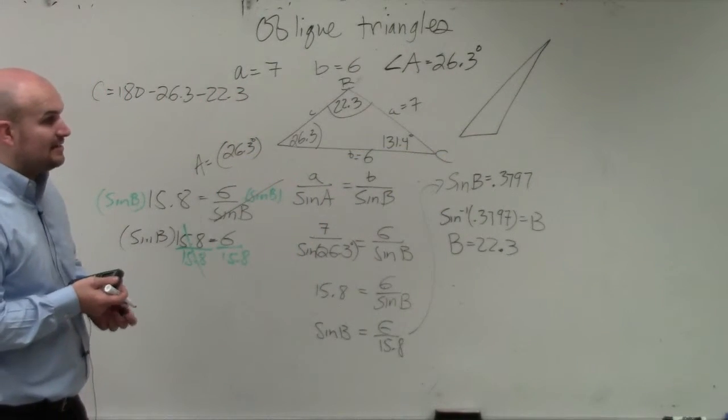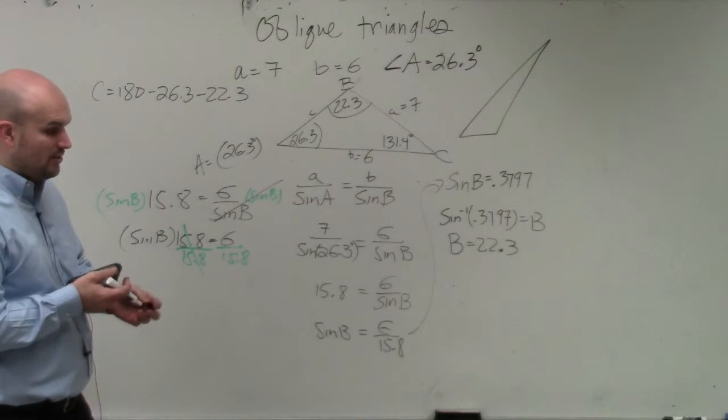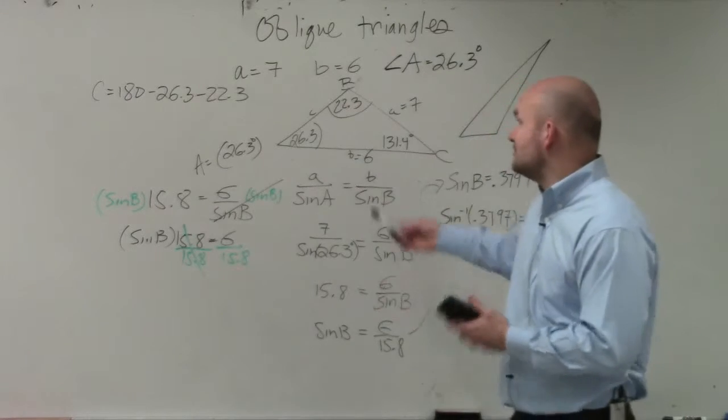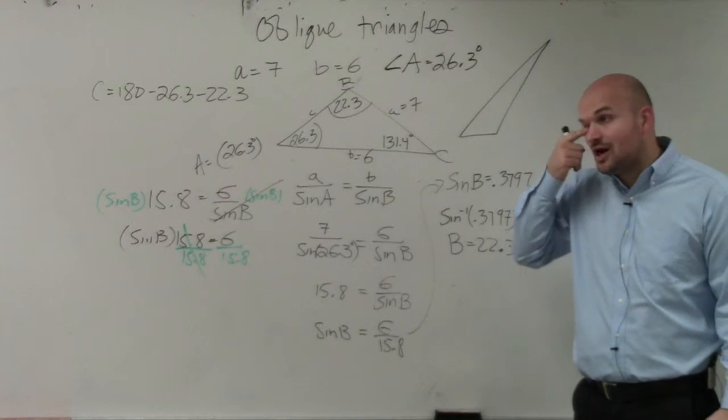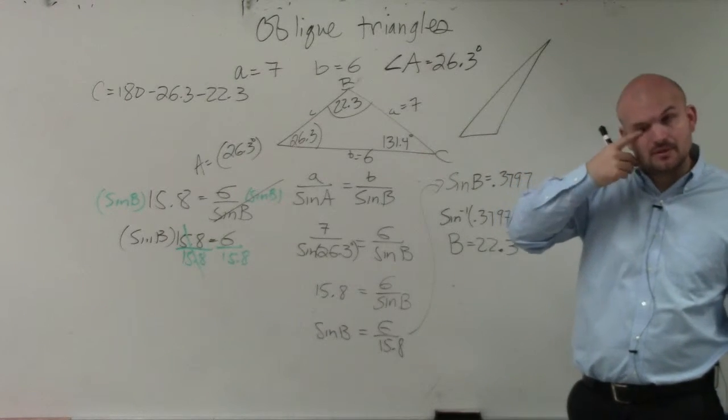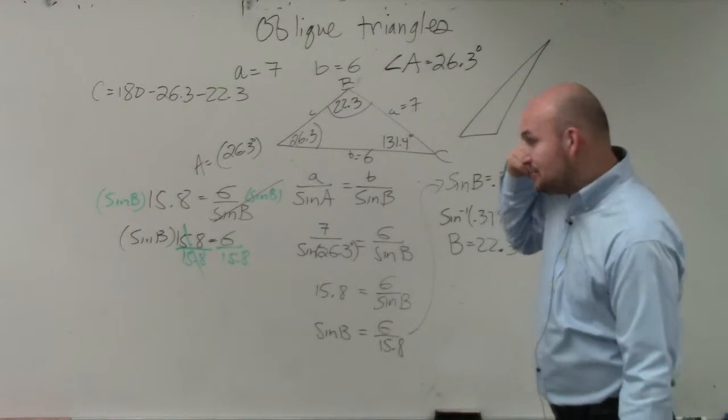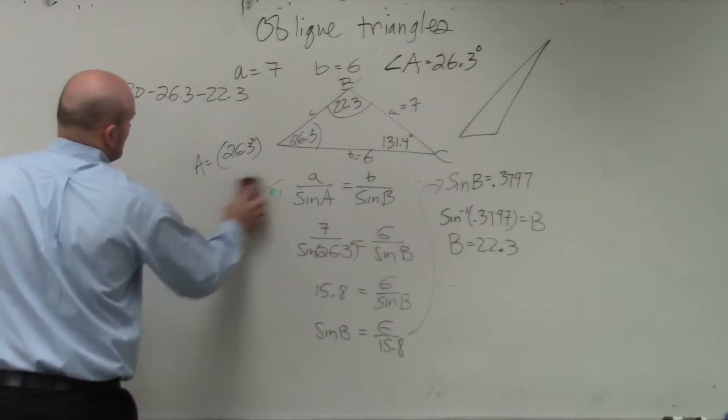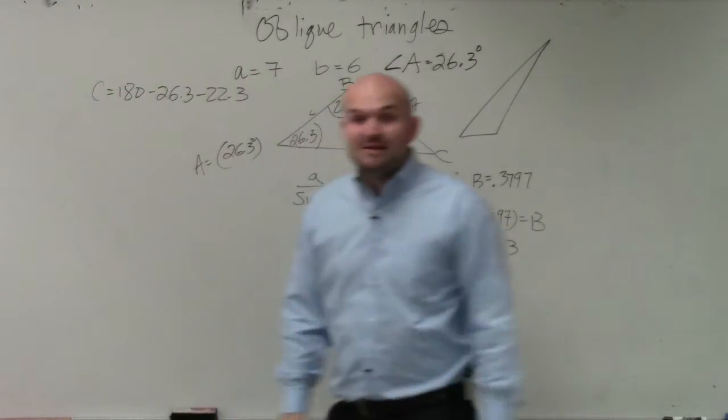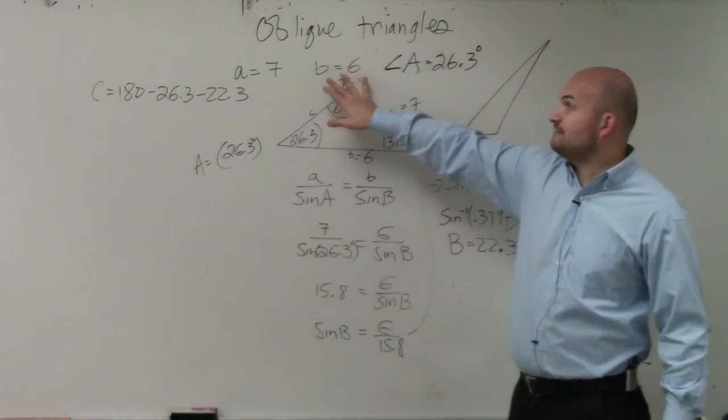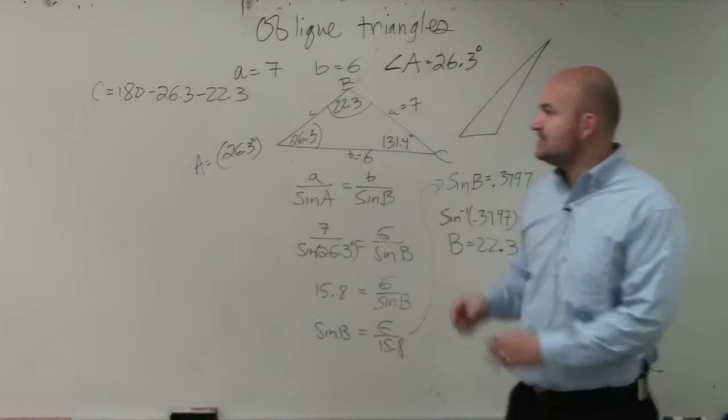We're still not done yet. So we're not done because now we found out the angle of C. So now we can do the law of sines to find the length of c, OK? So to do that, I'm going to erase this work over here. Just in case I would have made any kind of mistake, I always like to go back and again use my original information, and then just do this with c now.